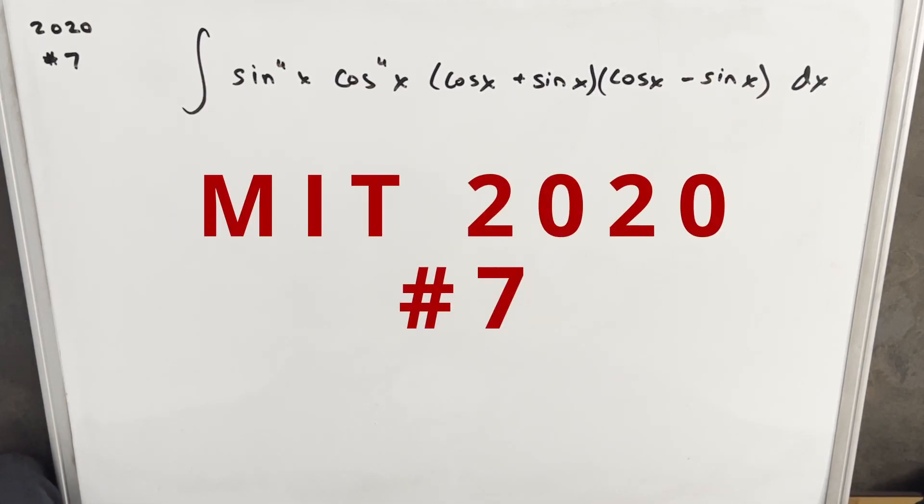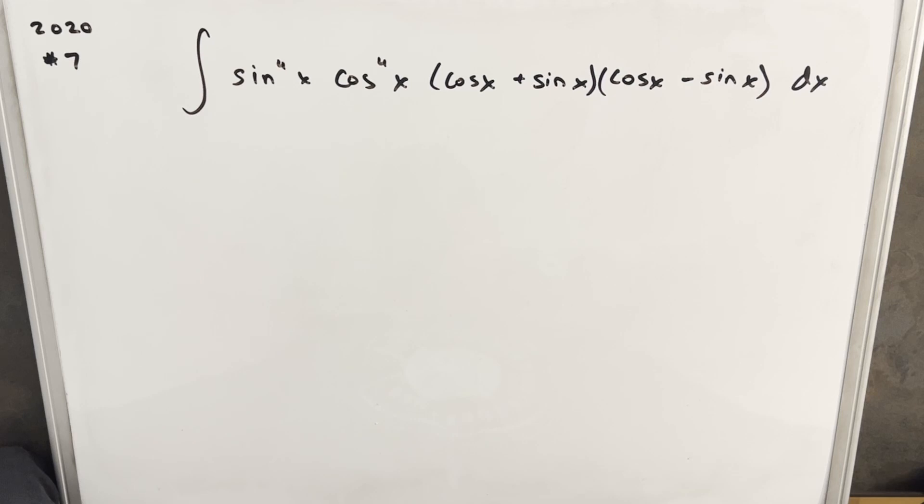Hey, we have here today another integral from MIT 2020. This was problem number seven. We have the integral of sin to the fourth x, cos to the fourth x, times cos x plus sin x times cos x minus sin x dx. Okay, pretty long expression there.